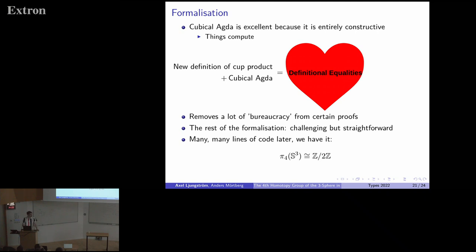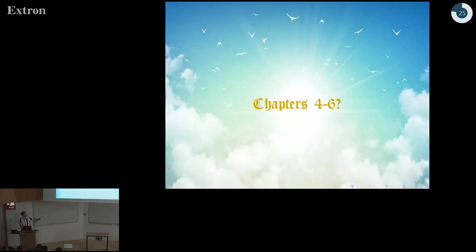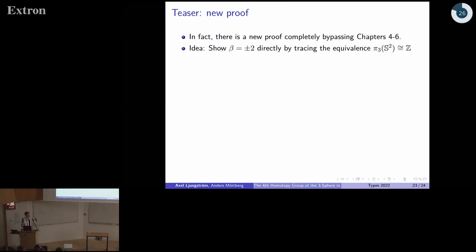How much time did I have left? Like two minutes? Good. Perfect. I said that chapters four to six were horrible. This is a little teaser now for some future work. They might actually not be that horrible if you do things differently from Guillaume. Lately I thought a lot about this fact that it's so hard to prove that this beta is plus or minus two. We should just be able to do it directly. And in fact, there is such a proof.